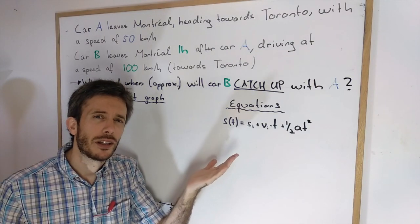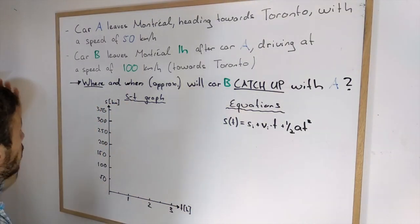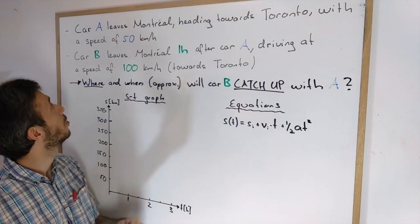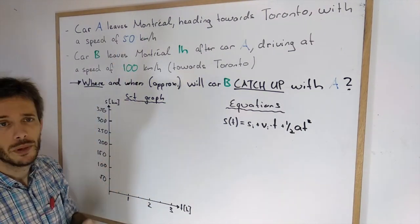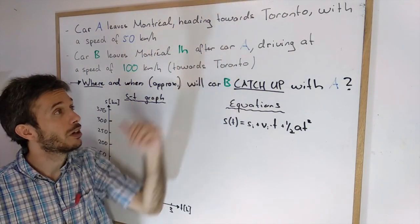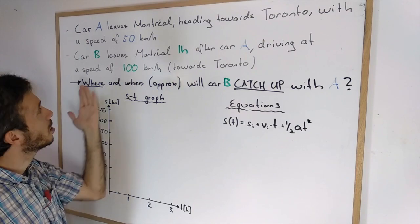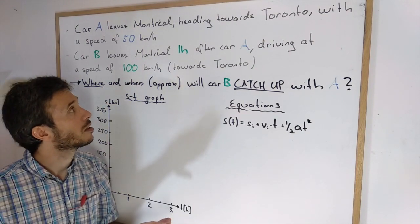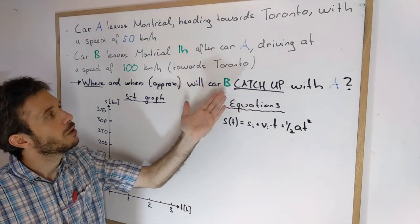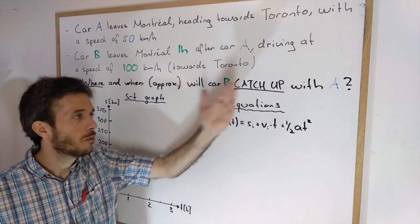So let's look at an example where car A leaves Montreal heading towards Toronto with a speed of 50 km an hour and car B leaves Montreal one hour after car A driving at a speed of 100 km an hour towards Toronto as well. The question is where and when will car B catch up with car A.